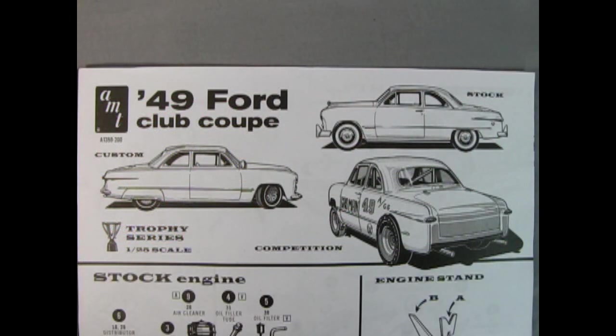The instruction sheet starts off by showing the three building options. Stock from 1949, the custom version with trends from 1962, and the Gas Man, the competition dragster with Cadillac power.